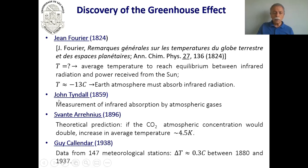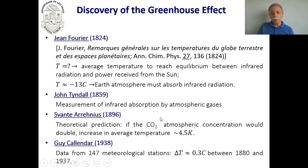Later, the Irish physicist John Tyndall did actual measurements on the infrared absorption by atmospheric gases. Much later, Svante Arrhenius — the famous Swedish chemist who won the Nobel Prize — did a correct calculation using data from Tyndall and others and tried to predict what would happen if atmospheric CO₂ concentration doubled. He concluded there would be an average temperature increase of around 4.5 degrees Kelvin — very close to current estimates.